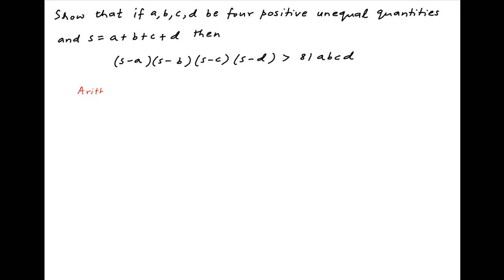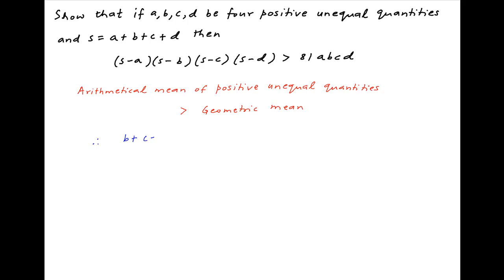We start by recalling that the arithmetic mean of positive unequal quantities is strictly greater than their geometric mean. Using this result, we can say that (b + c + d) / 3 is strictly greater than the cube root of b times c times d.